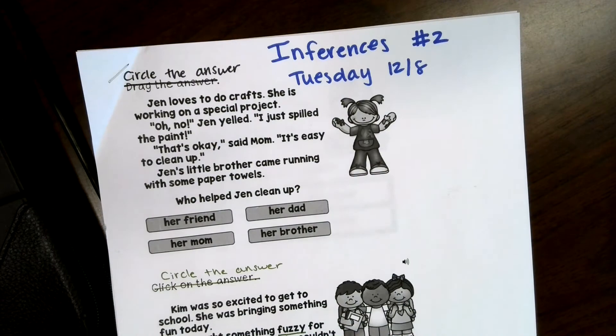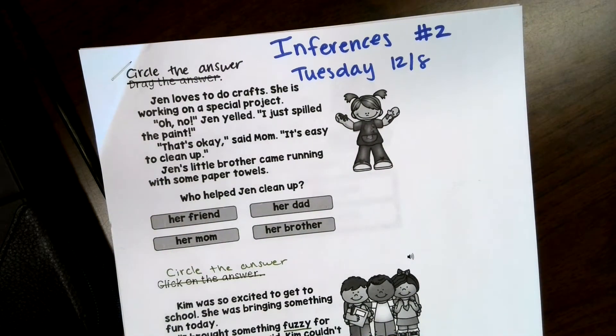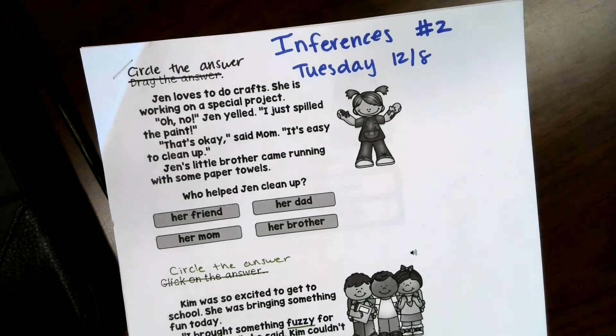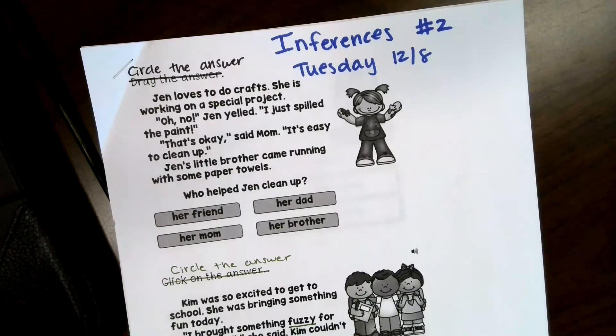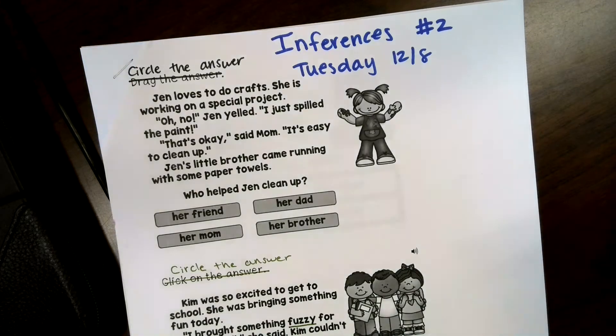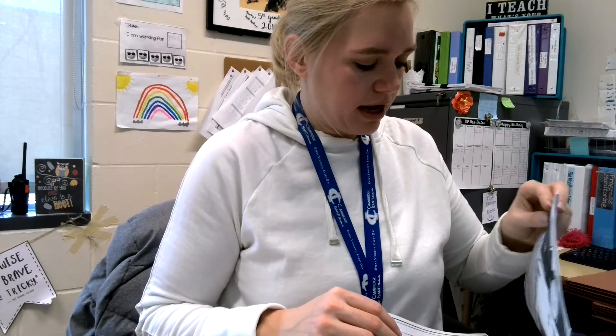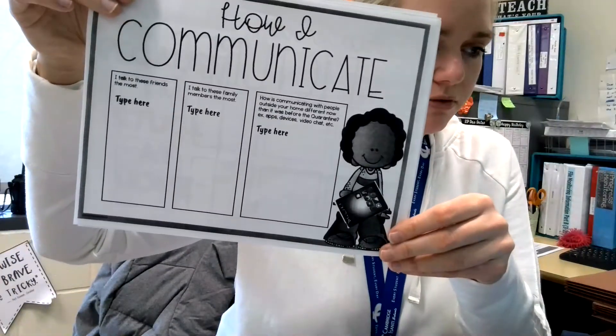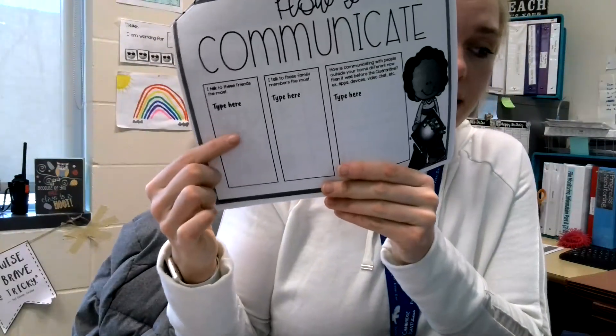So that is our inference practice number two. And then after that you are going to work on your My Quarantine book. I have it here to show you what page you need to work on today. Yesterday you had done the one where you write about the three things you miss and draw eight pictures, so hopefully you were able to do that. Today you are going to do the How I Communicate quarantine page. Who do you talk to most? Do you have any friends that you're still talking to? Write that in this first box.